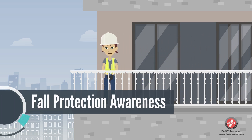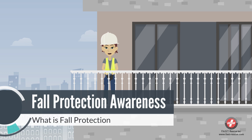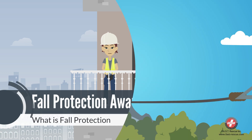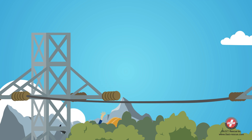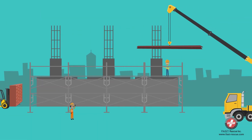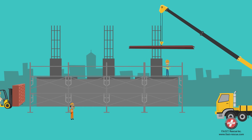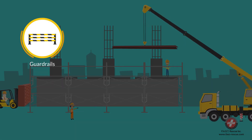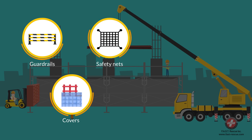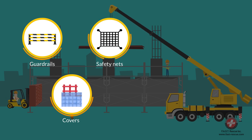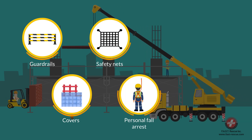Welcome to the Fall Protection Awareness Course. Fall protection is a method to prevent a person from falling, or by reducing the distance of a fall to limit physical damage. Conventional systems include guardrails, covers, safety nets, and personal fall arrest systems.